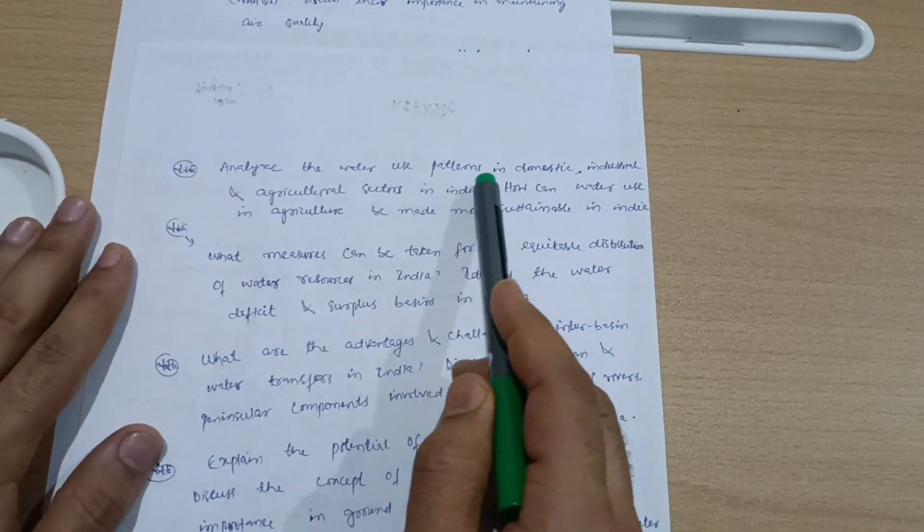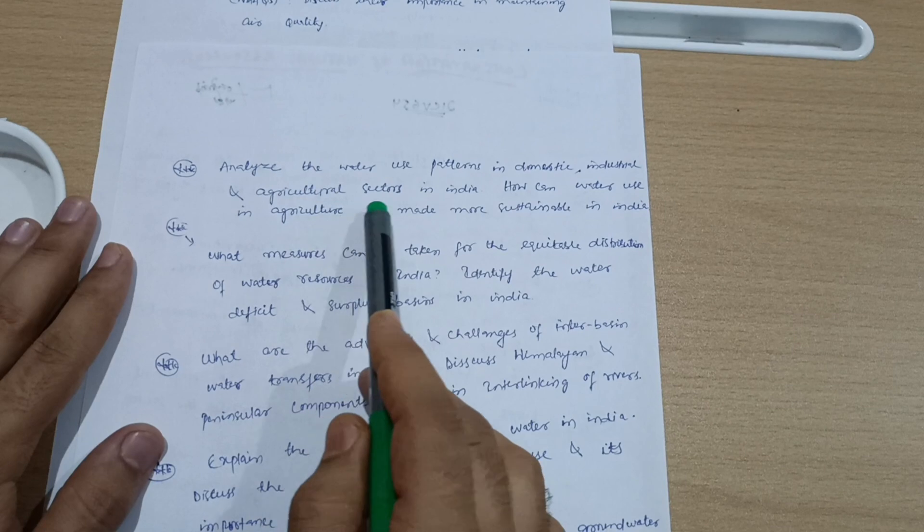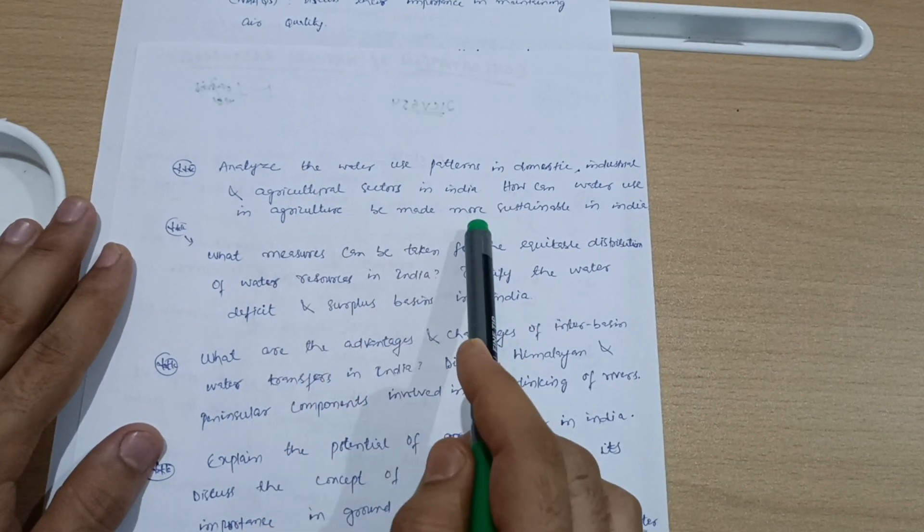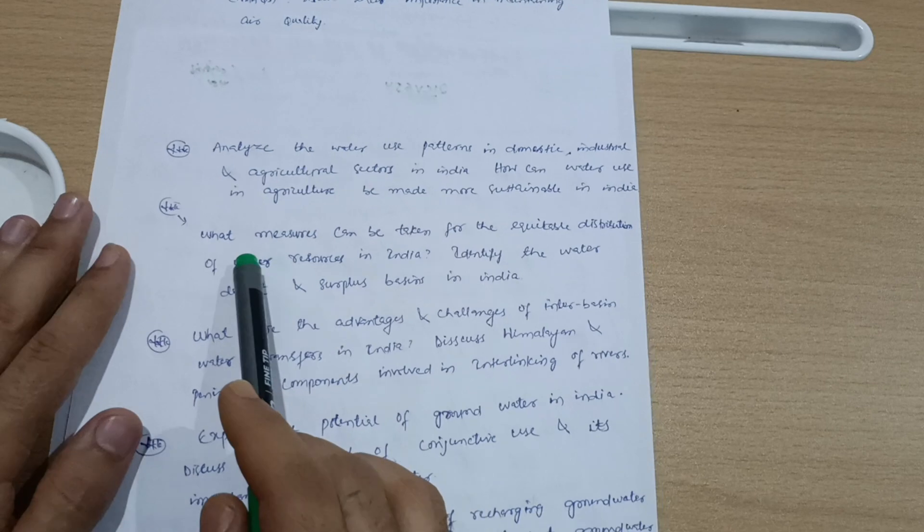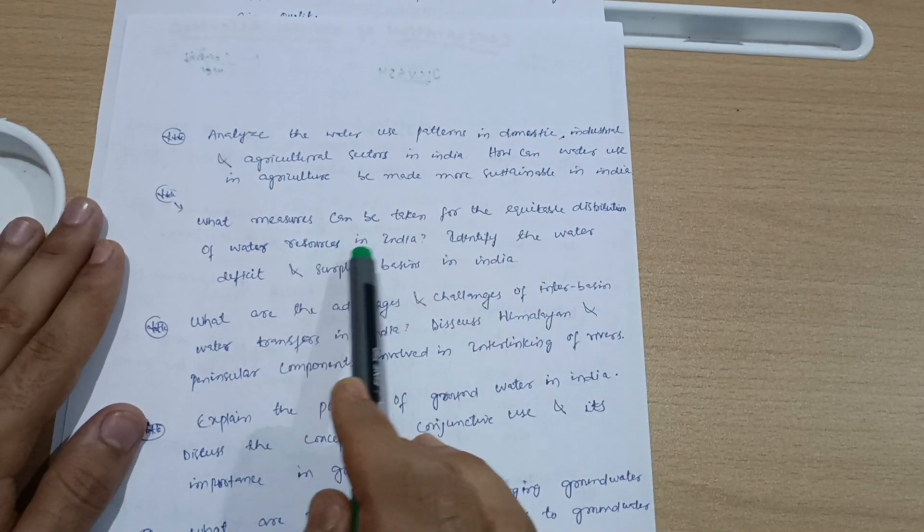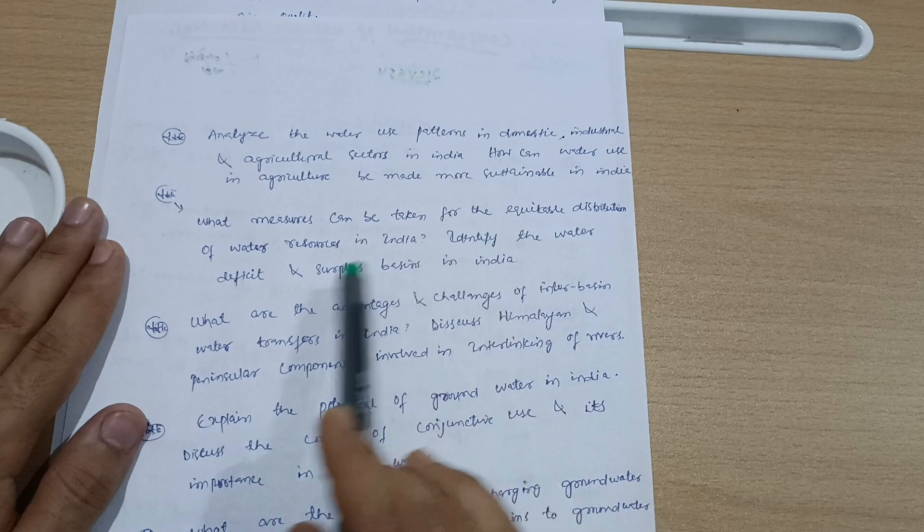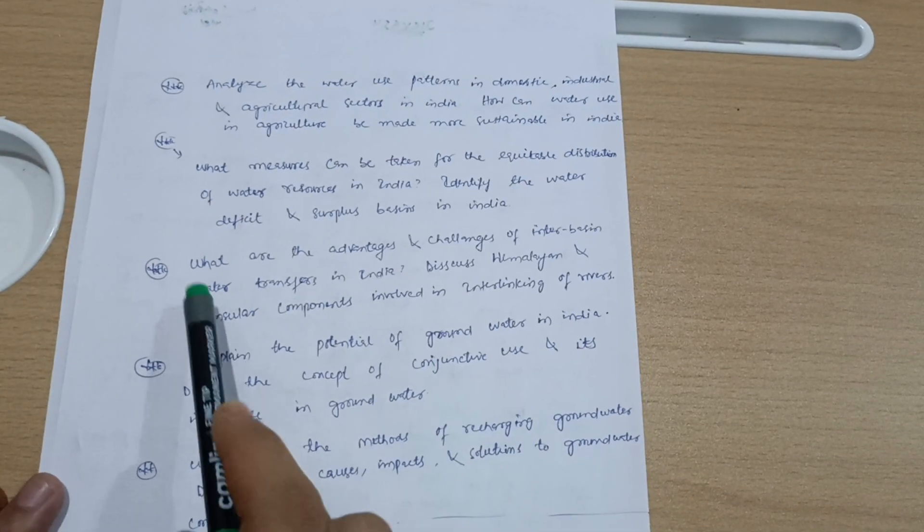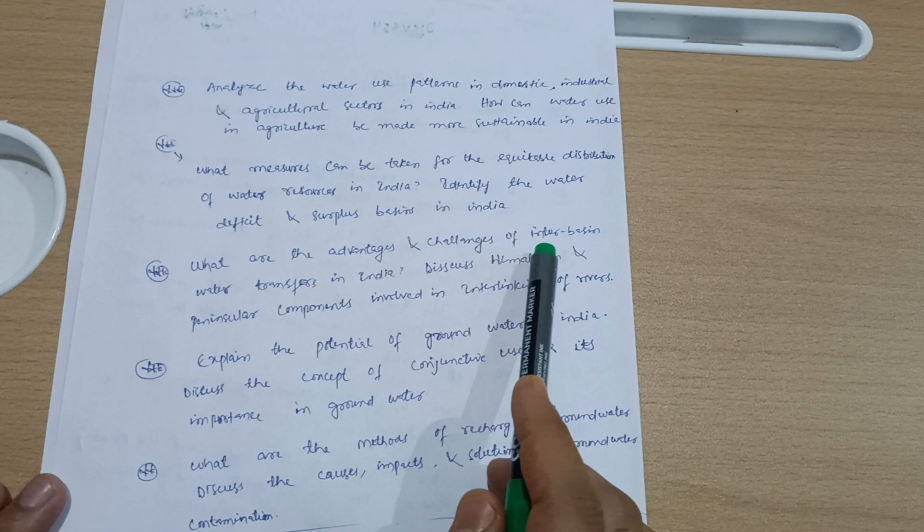Analyze the water use patterns in domestic, industrial, and agricultural sectors in India. How can water use in agriculture be made more sustainable in India? What measures can be taken for the equitable distribution of water resources in India? Identify the water deficit and surplus basins in India.